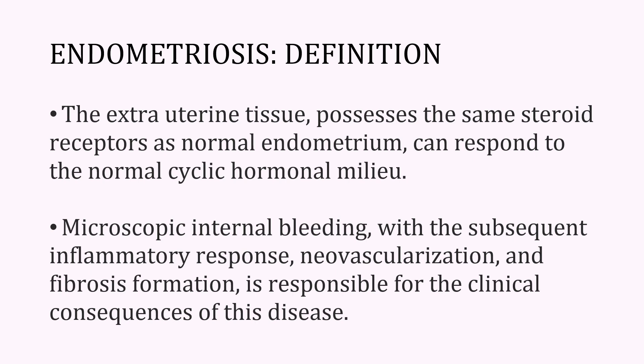By definition, endometriosis is defined as the presence of endometriotic tissue outside the endometriotic cavity. The extra-uterine tissue possesses the same steroid receptors as normal endometrium and can respond to the normal cyclic changes in the hormones. So this tissue can also bleed, and when it bleeds there is internal bleeding in the peritoneal cavity with the subsequent response and neovascularization and fibrosis formation.